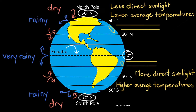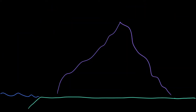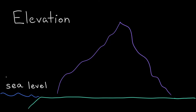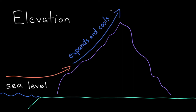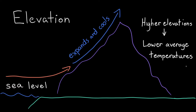This creates dry conditions at the cold poles and desert conditions in regions near the 30 degree latitude lines. Another important influence on regional climates is elevation, or how high a place is above sea level. As air rises from lower to higher elevations, it expands and cools. That's why regions at higher elevations, like mountains, tend to have lower average air temperatures than regions at lower elevations.